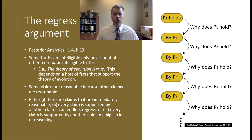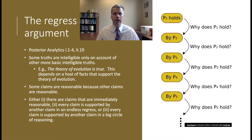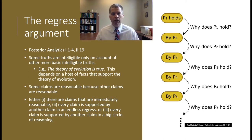Begin with the idea that some truths are intelligible only on account of other more basic intelligible truths — that there's a relation of dependence between claims that are known. For example, take the theory of evolution. It's reasonable to believe that theory is true, but the reason it's reasonable is because there are other more basic truths known prior to it. If you look at Darwin's original book On the Origin of Species, you can see that Darwin argues for his theory on the basis of observed facts he gathered and collected. So some claims are reasonable because other claims are reasonable.